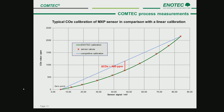Every Comtec sensor receives a comparative calibration. Several calibration points are determined to reach higher accuracy. The calibration points are determined by applying certified test gas to the sensor in different concentrations relating to the measuring range.